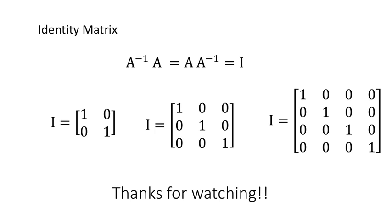So that's all you need to know about identity matrices. They act just like a 1 in normal algebra, and they have ones on the leading diagonal and zeros everywhere else. Good luck.